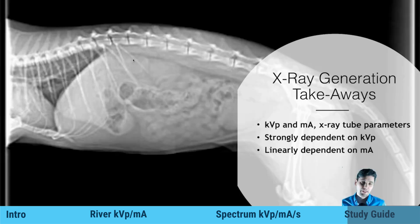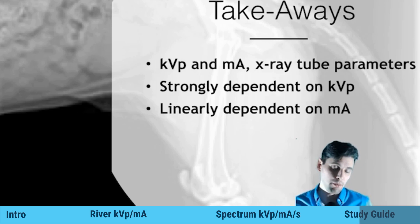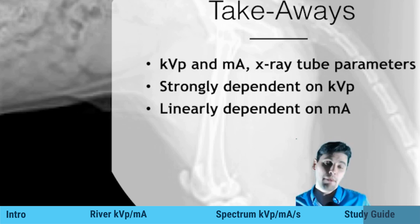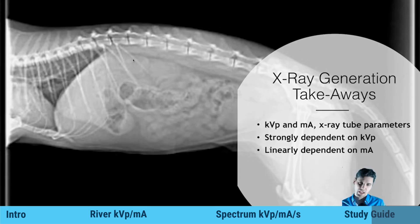At a high level, the takeaways are that KVP and MA are the two main technical parameters. KVP is the tube potential — it modifies the shape of the x-ray spectrum and dramatically changes the number of x-ray photons, scaling roughly as KVP squared. The MA goes linearly — the shape of the x-ray spectrum stays the same and the number of photons just scales as you change the MA.